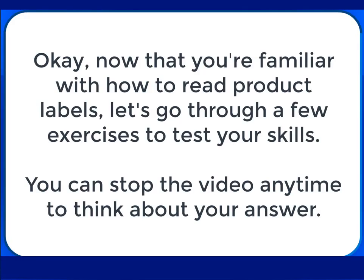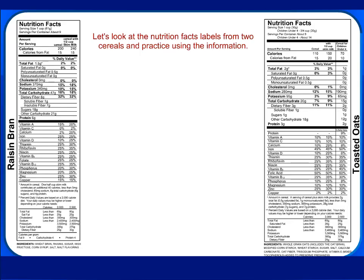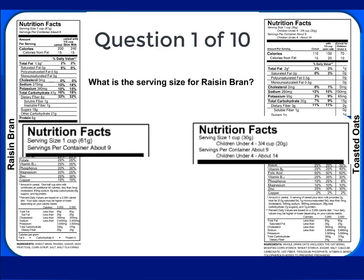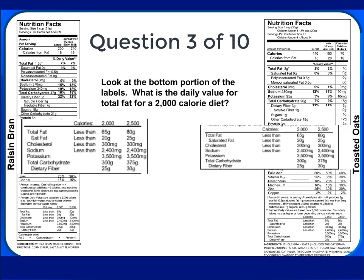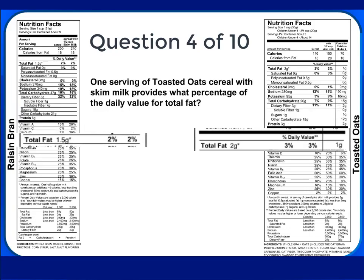Now that you're familiar with how to read product labels, let's go through a few exercises to test your skills. You can stop the video anytime to think about your answer. Let's look at the Nutrition Facts label from two cereals and practice using the information. What is the serving size for Raisin Bran? The correct answer is 1 cup. If you ate one and one-half cups of Raisin Bran with skim milk, how many calories would you consume? The correct answer is 360. What is the daily value for total fat for a 2,000 calorie diet? The correct answer is less than 65 grams. One serving of toasted oat cereal with skim milk provides what percentage of the daily value for total fat? The correct answer is 3%.